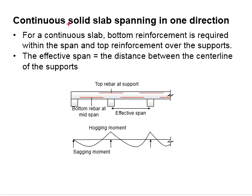The effective span of the continuous slab is normally considered as the distance between the central line of the support.